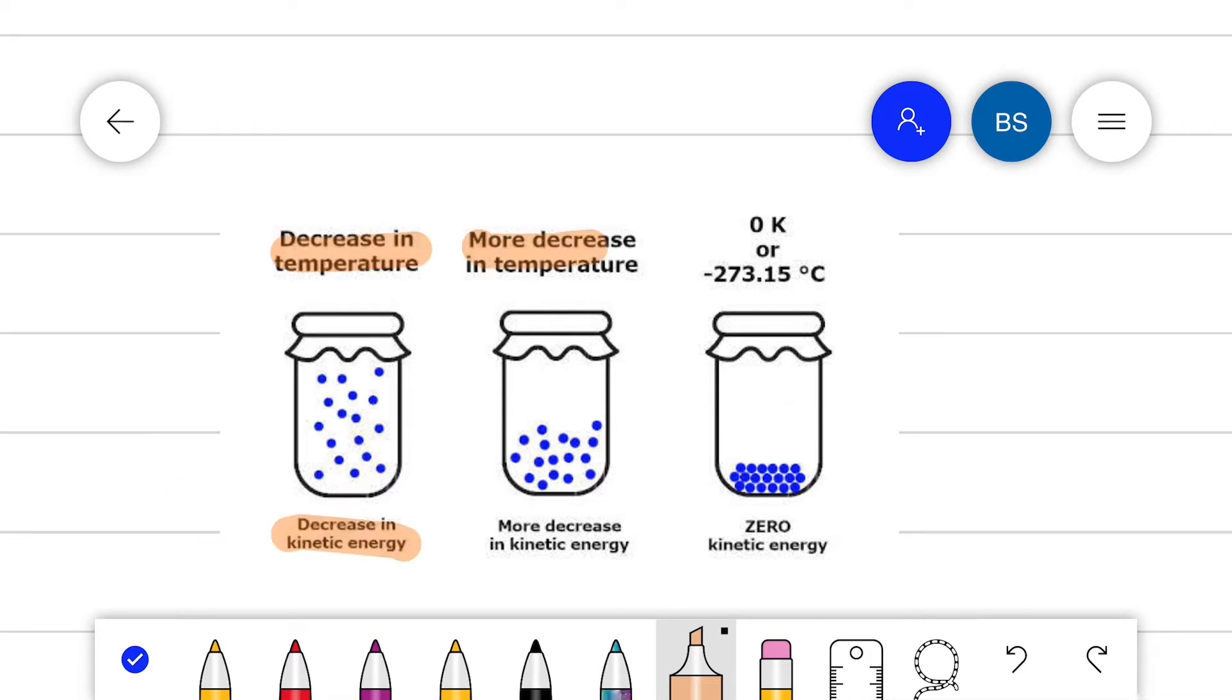If we decrease the temperature even more, we will slow down. Finally, the particles will slow to a complete stop. That's why there is no more kinetic energy. In this situation, we have reached zero Kelvin.